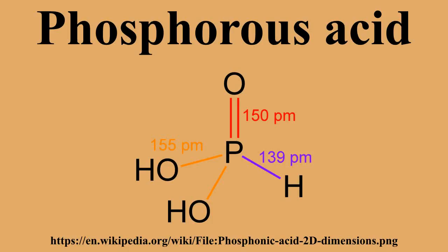H3PO3 is more clearly described with the structural formula HPO(OH)2. This species exists in equilibrium with the minor tautomer P(OH)3. IUPAC recommendations (2005) are that the latter be called phosphorus acid, whereas the dihydroxy form is called phosphonic acid.